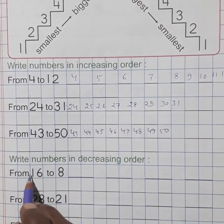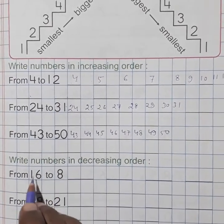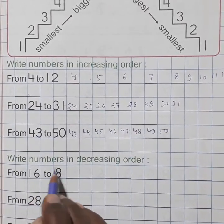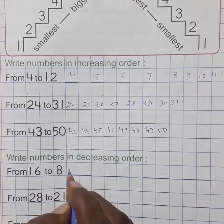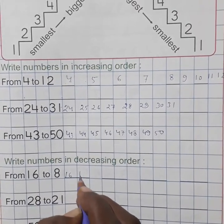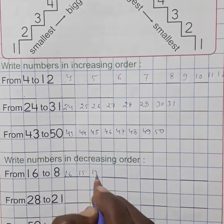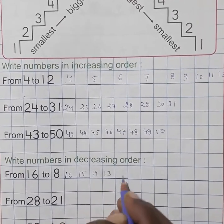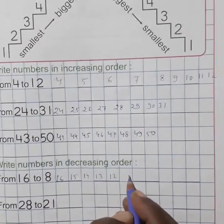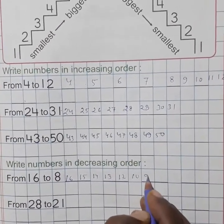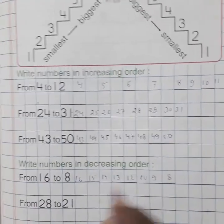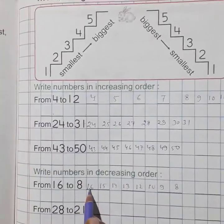Next question, write numbers in decreasing order. Here from 16 to 8, now write in decreasing order, the opposite word. Just like 16 to 8, write this type: 16, 15, 14, 13, 12, 10, 9, 8.